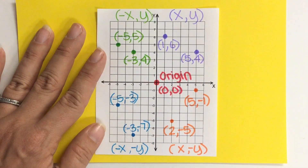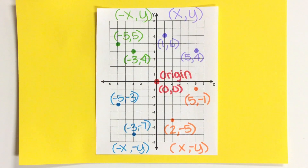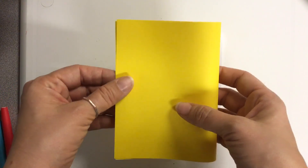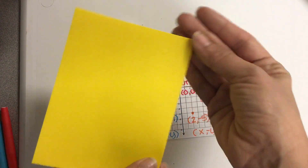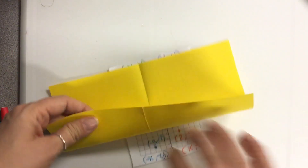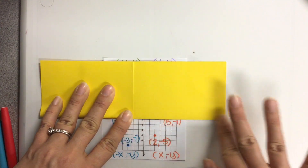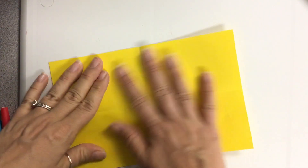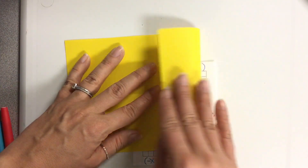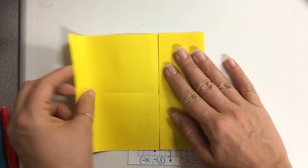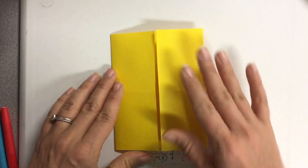Now we're going to extend this into our foldable. Grab your yellow sheet — or whatever color you have — and fold it in half. Some people call this a hamburger fold or a horizontal fold. Then open it up and give it a hot dog fold, or a vertical fold. When you open that up, you have a plus sign. Then we're going to make a shutter fold: fold in the corners into that middle fold. It's called a shutter fold because it's like a window shutter.